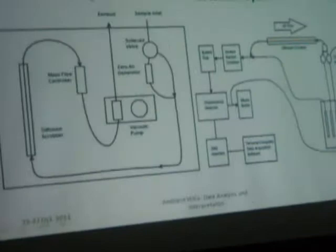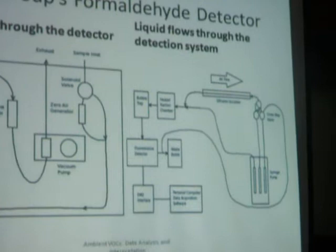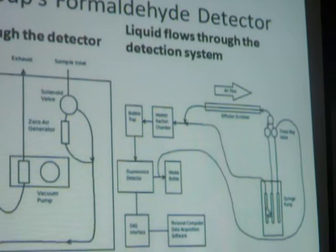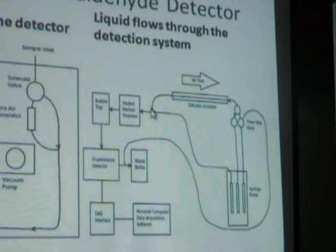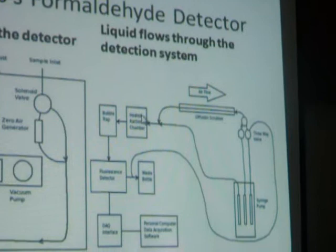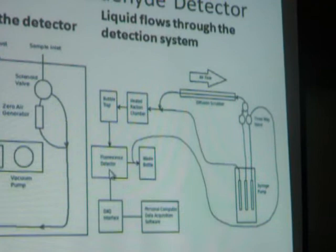On the solution side, through the diffusion scrubber, we pass an acidified solution in which formaldehyde will dissolve. We then add a liquid-phase reagent after the scrubber. This goes through a heated reaction chamber, where it reacts for a few minutes at about 60°C before passing through a flow cell and into a fluorescence detector. We are measuring the fluorescence of the derivative that is formed through the reaction.